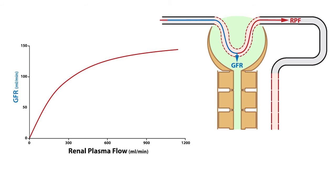However, this relationship is not linear. For example, when renal plasma flow is between 0 and 300 milliliters per minute, GFR increases from 0 to 90 milliliters per minute. However, if we double the renal plasma flow from 300 to 600 milliliters per minute, GFR increases from 90 to 125 milliliters per minute. Over this range in renal plasma flow, the rate of increase in GFR is reduced by two-thirds compared to the previous change in renal plasma flow.